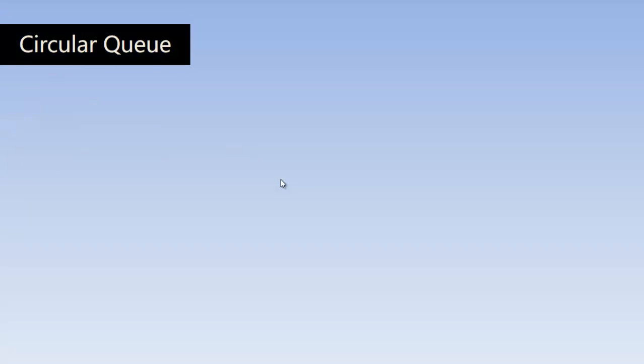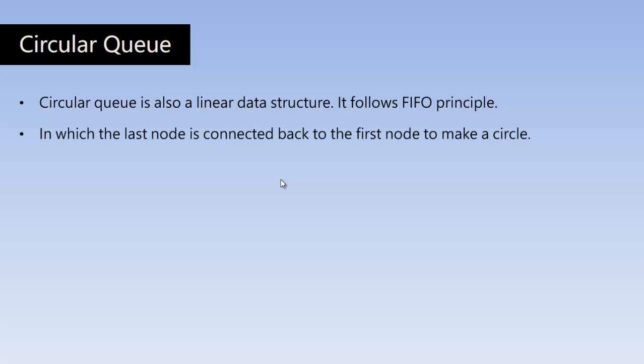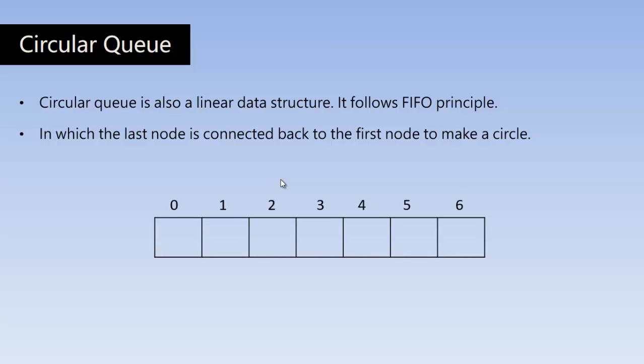So what is the circular Queue? Circular Queue is also a linear data structure and a type of Queue. It follows the FIFO principle, as we did in the normal linear Queue, in which the last node is connected back to the first node to make a circle.